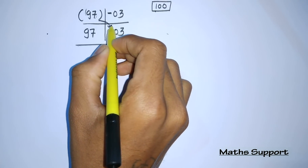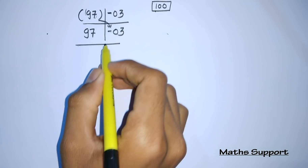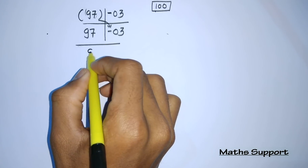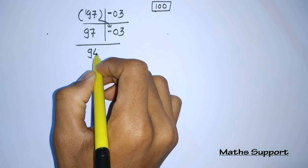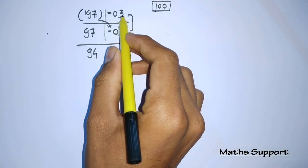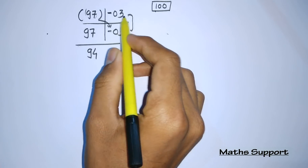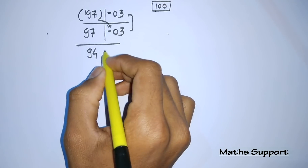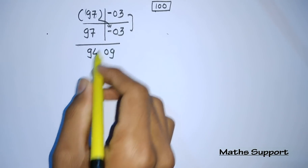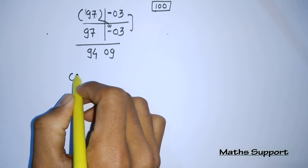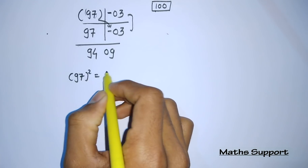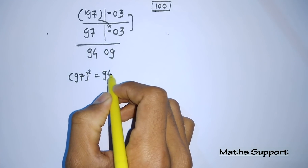Now 97 is 3 less than 100, so we write 03 in 2 digits for both. We add this cross: 97 minus 3 equals 94. And the multiplication of the differences: 3 times 3 equals 9, written in 2 digits as 09. So 97 squared equals 9409.